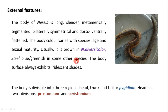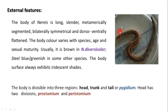In some other species there is steel blue or greenish color. The body surface always exhibits iridescent shades — their body is sometimes shining. The body is divisible into three regions: head, trunk, and tail, also called pygidium.